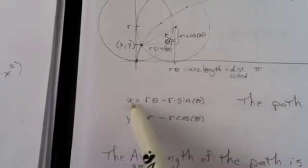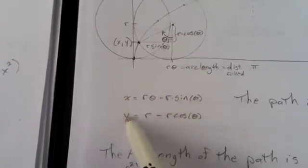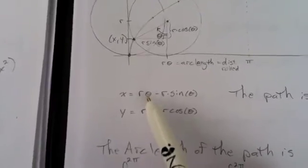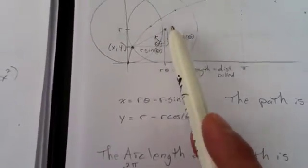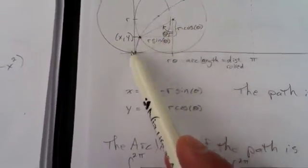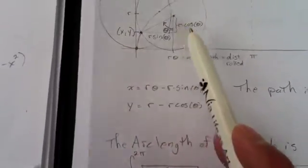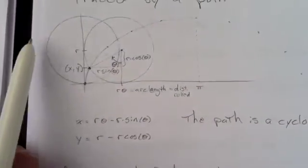And so what you have here is the parameterized formula. Here, my parameter is the angle of this initial radius moving from a vertical down position as the circle rolls along this flat plane there.